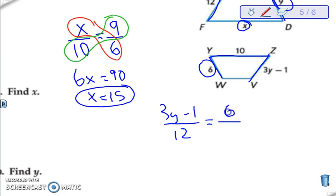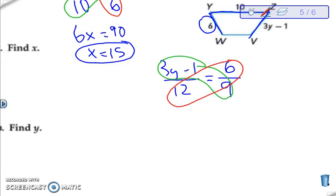So we'll go ahead and solve it out. So 9 times 3y minus 1 is equal to 6 times 12, which is 72. So 27y minus 9 equals 72.